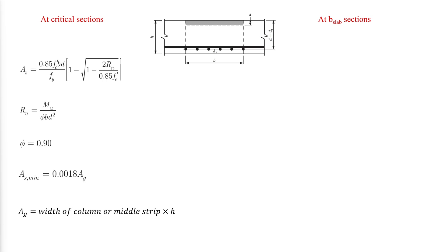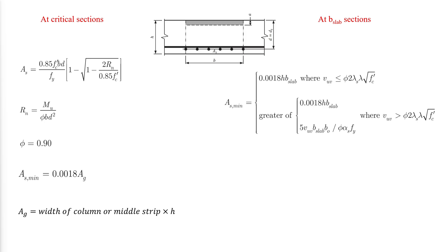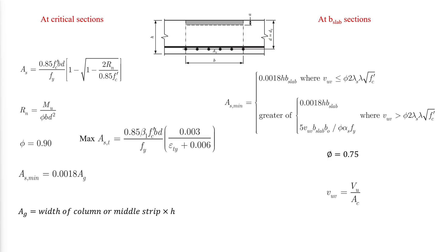The required flexural reinforcement in the slab within B-slab can also be determined using a corresponding equation, where φ is 0.75 for shear, and Vuv is the factored shear stress on the critical section for two-way action from the controlling load combination. At critical sections, the maximum allowed flexural reinforcement area is limited to ensure the section is tension-controlled, where B is the width of the column or middle strip. If the calculated required reinforcement area exceeds the maximum allowed, the thickness of the slab H should be increased. A similar check should be done for reinforcement within B-slab.